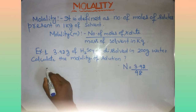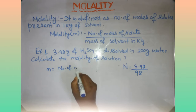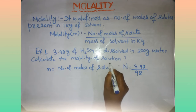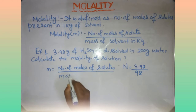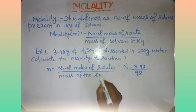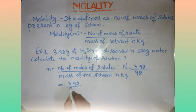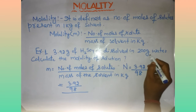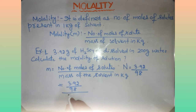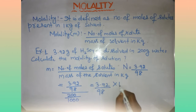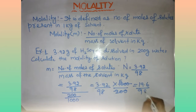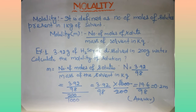The molecular mass of H₂SO₄ is 98. So molality M equals number of moles of solute upon mass of solvent in kg, which is 3.92/98 upon 200g divided by 1000 to convert to kg. This gives 3.92 × 1000 upon 98 × 200, which simplifies to 19.6 upon 98, equal to 0.2 m.